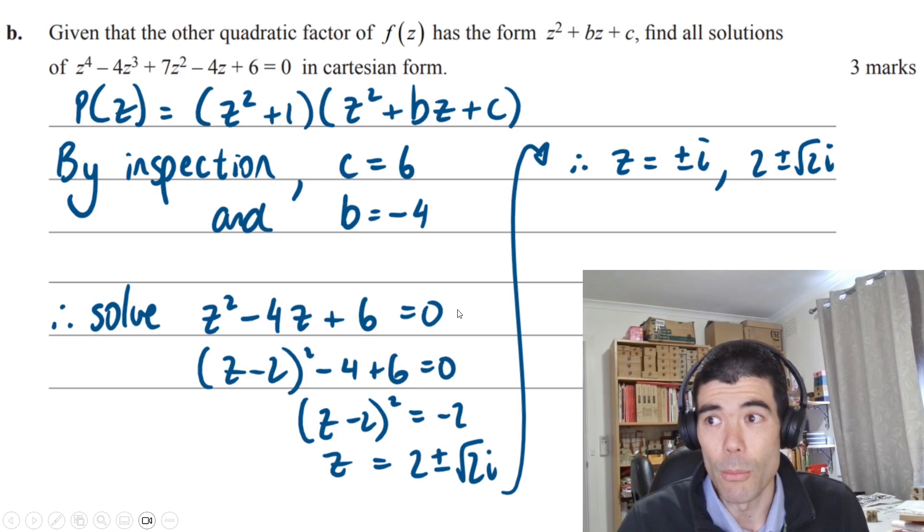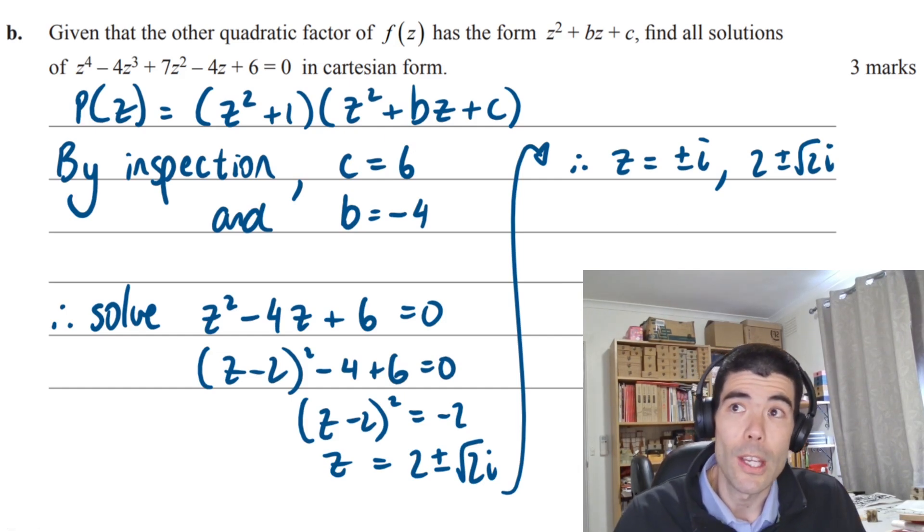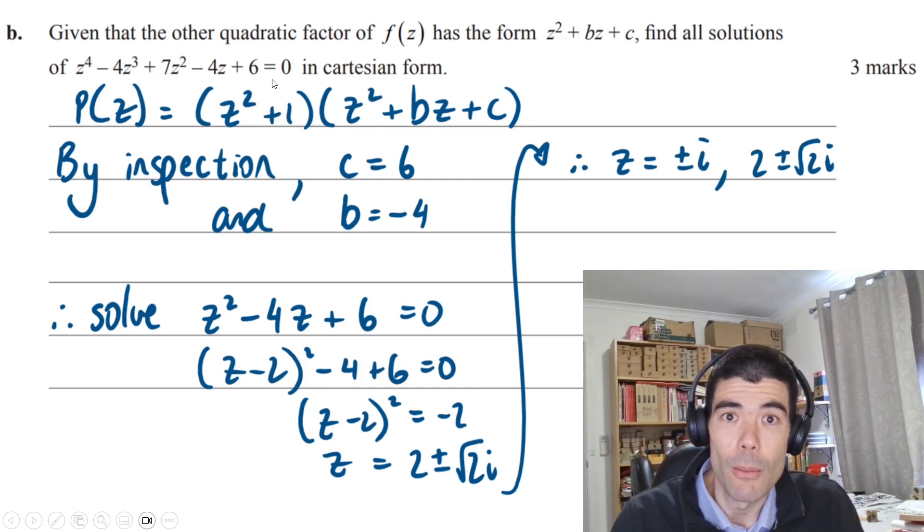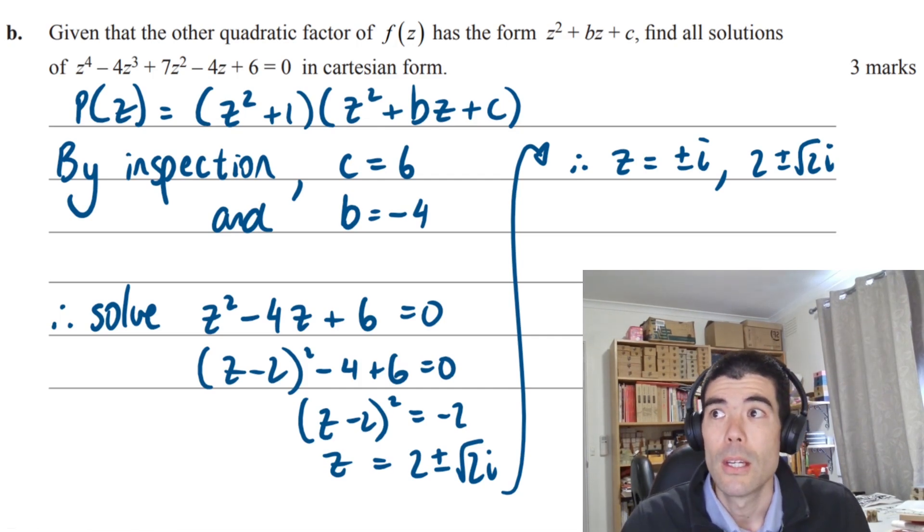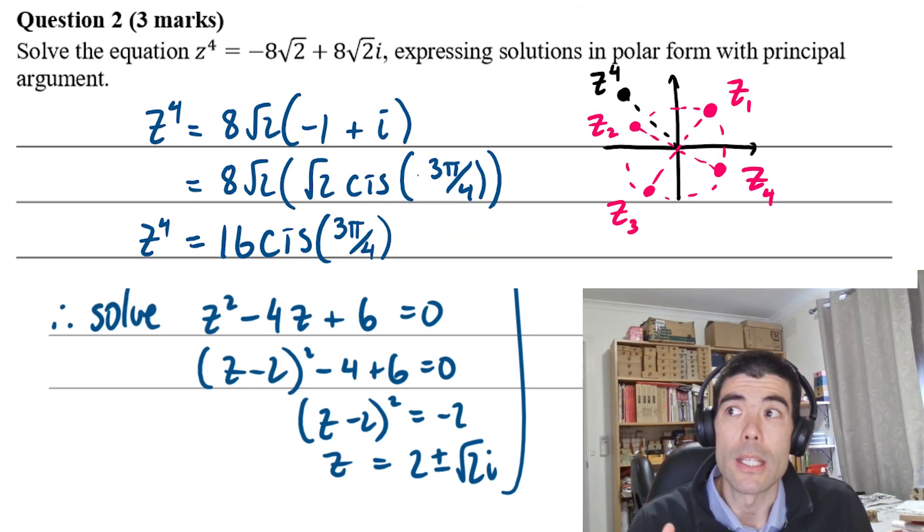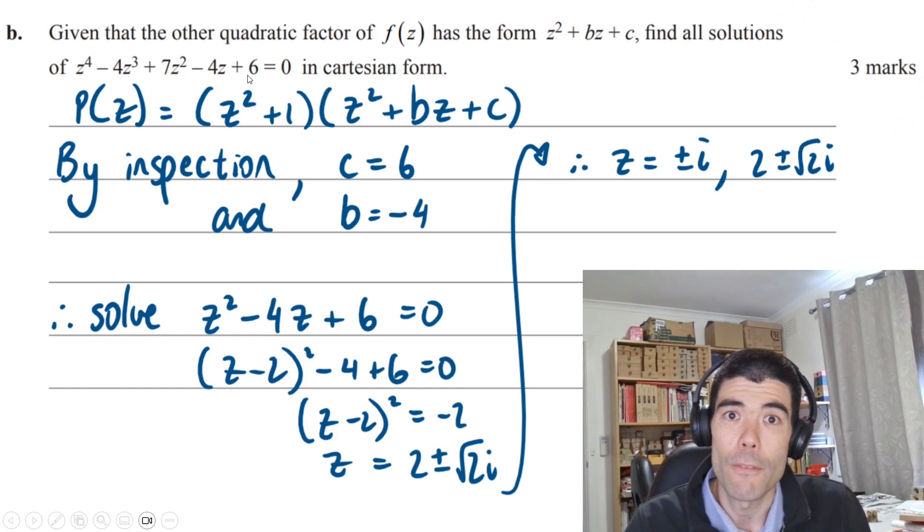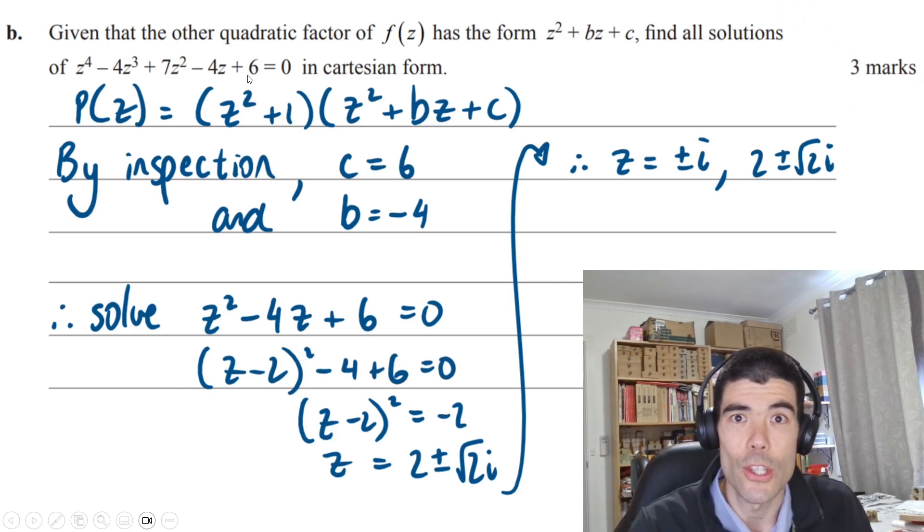Our quadratic becomes z² - 4z + 6. You can do that using quadratic formula. I've done it using completing the square. We get two solutions. Combining that with the two we had from part a, we get our four solutions, which do occur in conjugate pairs, because this quadratic polynomial had real coefficients. So there's an example of the conjugate root theorem type polynomial.